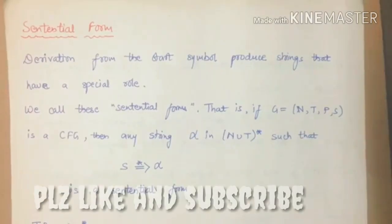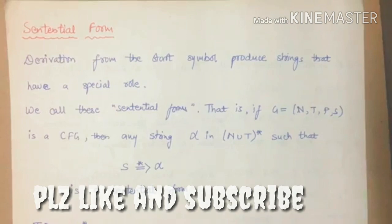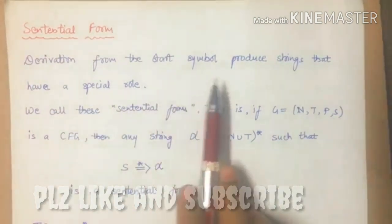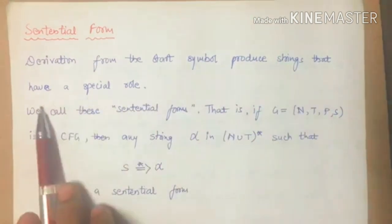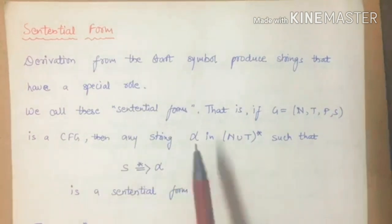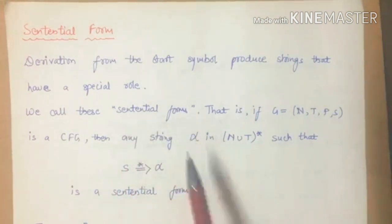Now let's look at sentential form. What is sentential form? Derivation from the start symbol produces a string that has a special rule. We call it sentential form.